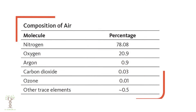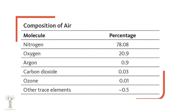If we look at this chart, it shows the molecules present in our air: about 78 percent is nitrogen, about 21 percent is oxygen, and then we have other trace elements.